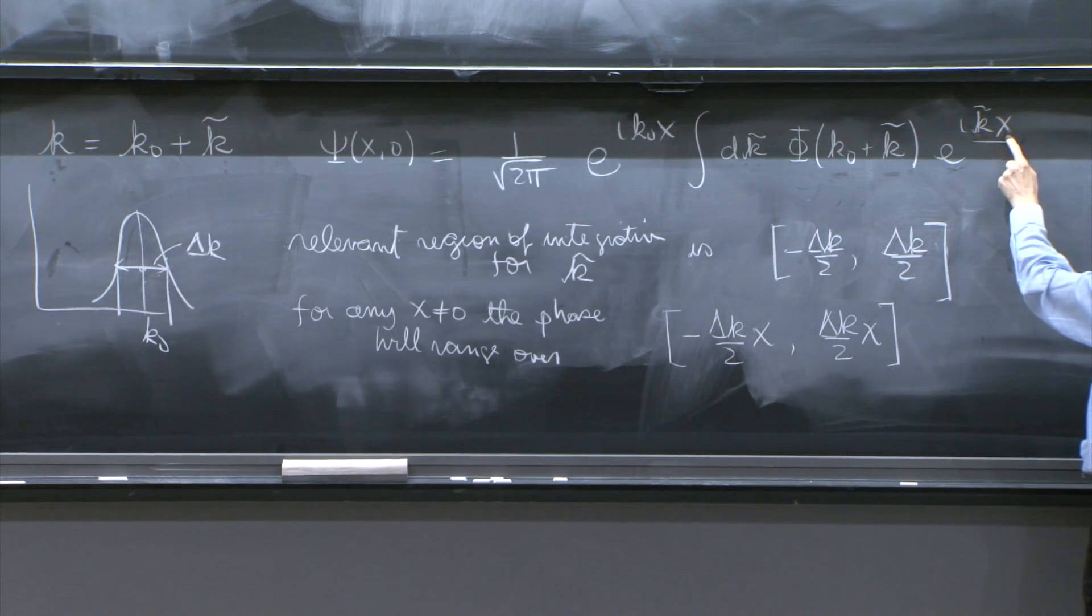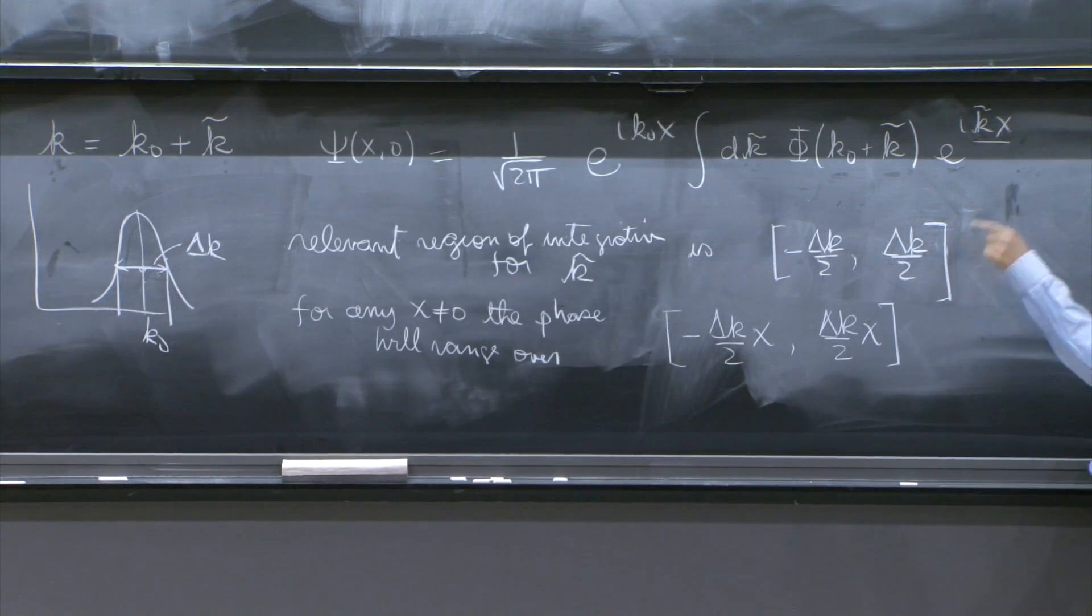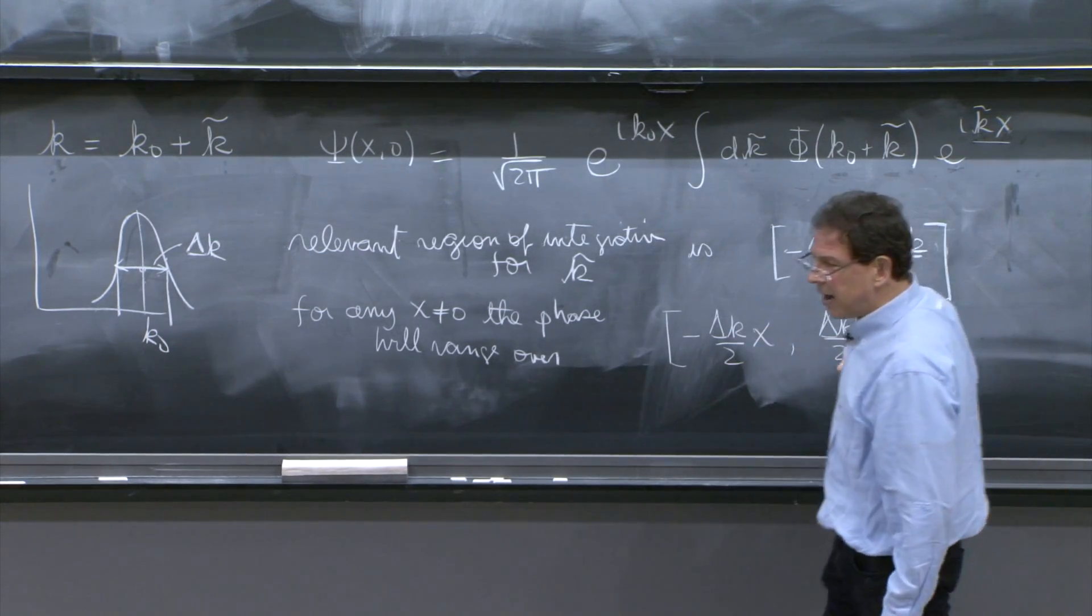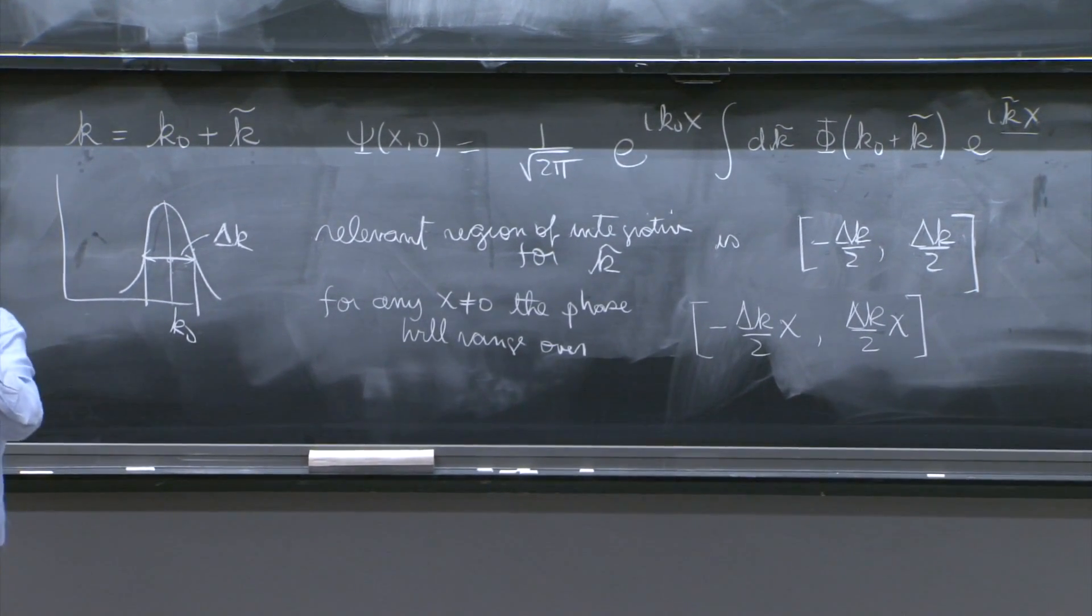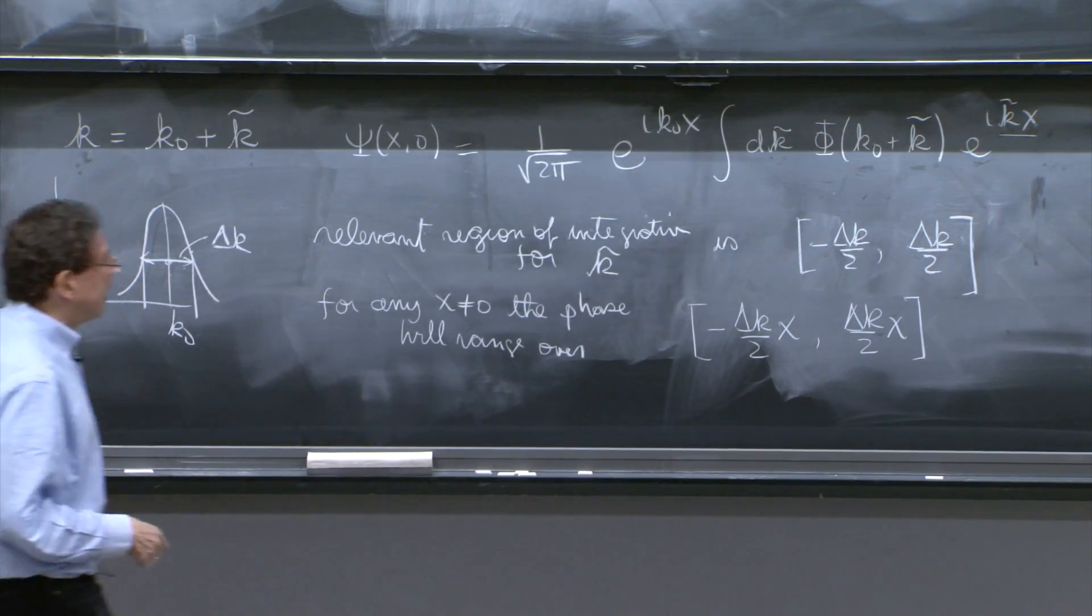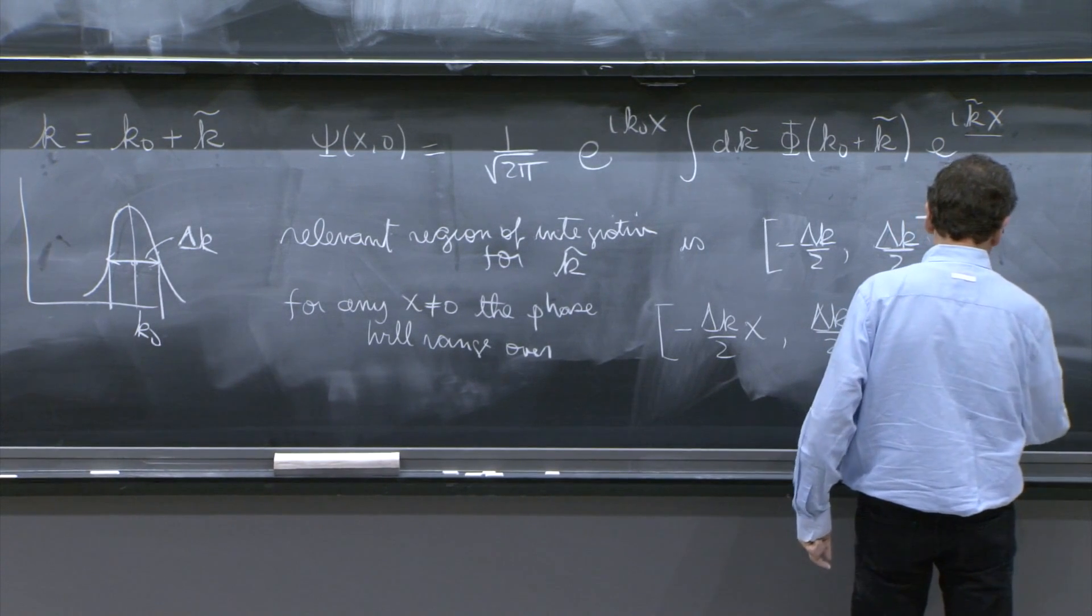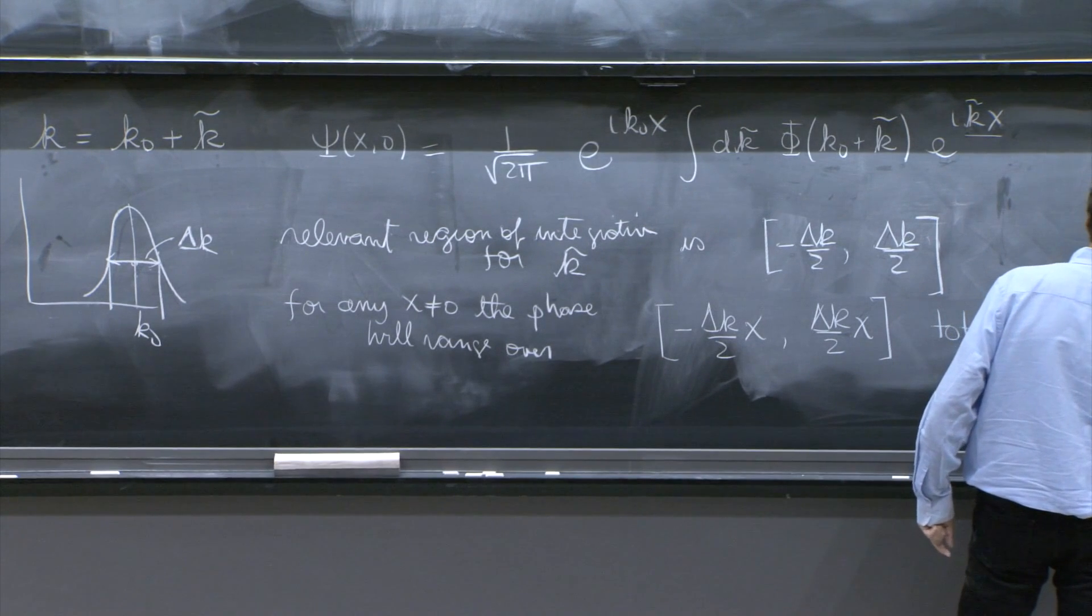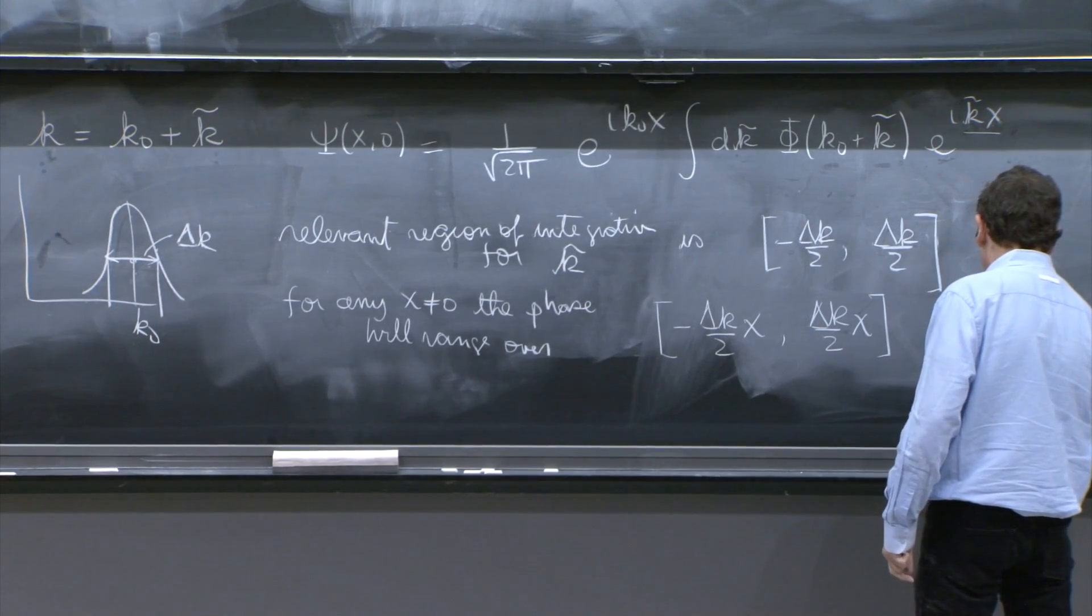And now you have a running phase that you don't manage to make it stationary. Because when x is different from 0, this is not going to be stationary. It's going to vary from this range to this, from this value to that value. So the total, as you integrate over that peak, your phase excursion is going to be delta k times x. Total phase excursion is delta k times x.